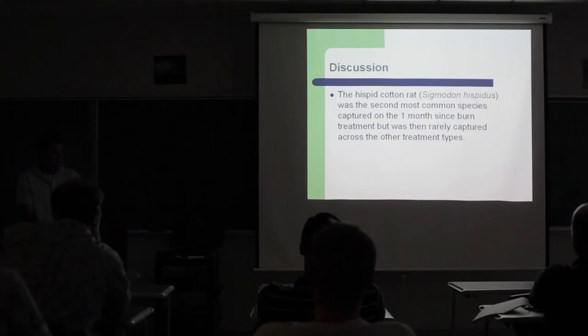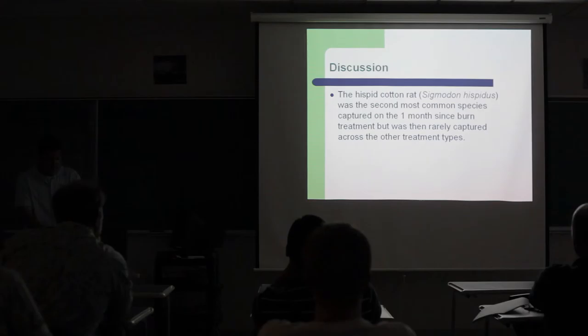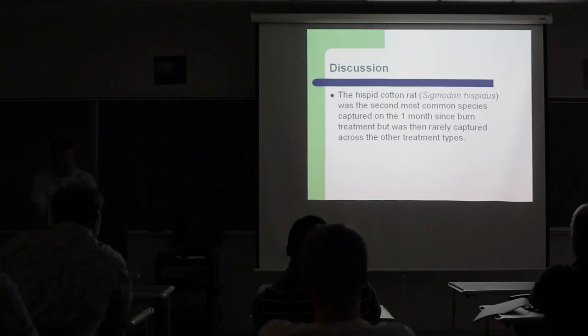The hispid cotton rat was the second most common species captured on the one-month treatment and was rarely captured on any of the other treatments. This has been shown that it quickly invades regenerating stands of seedlings and dense, low vegetation. As the stands develop and canopies shade out the understory vegetation, cotton rat numbers dwindle in response to the changing habitat suitability.